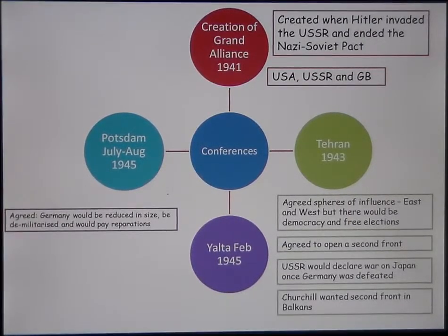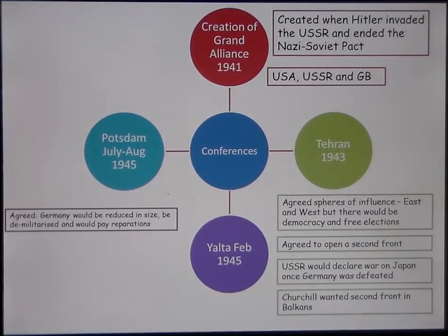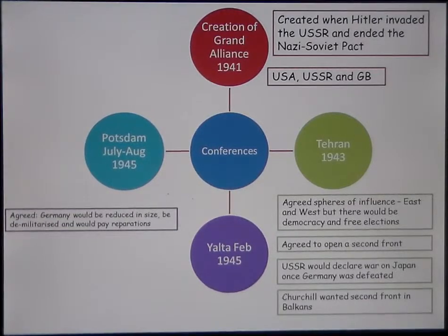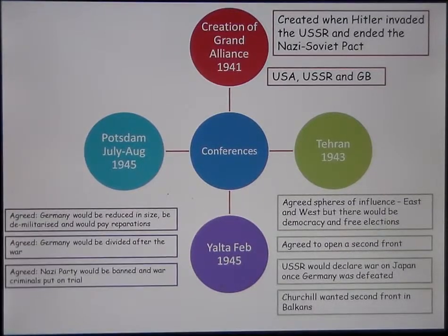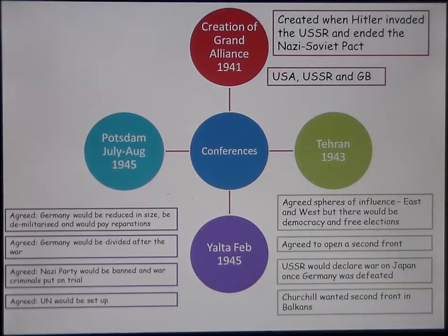The next meeting was at Yalta in February 1945, after D-Day, which was launched in June 1944. They were thinking more specifically about how to deal with Germany at the end of the war. They agreed Germany would be reduced in size, demilitarized, and would pay reparations; that Germany would be divided after the war; that the Nazi party would be banned and war criminals put on trial; and that the UN would be set up.